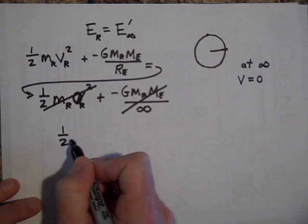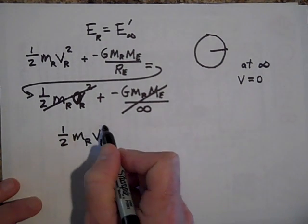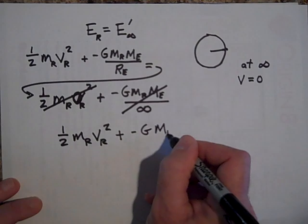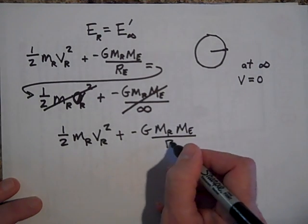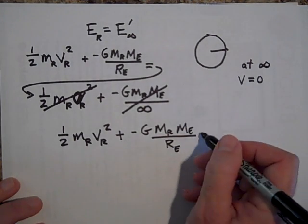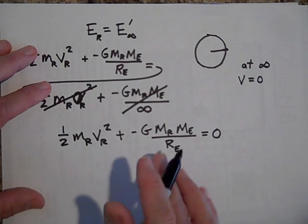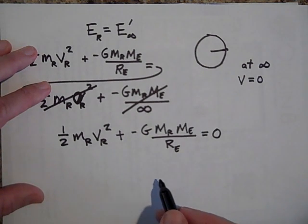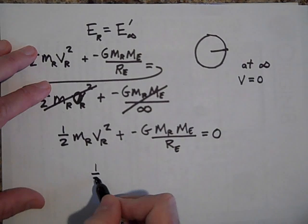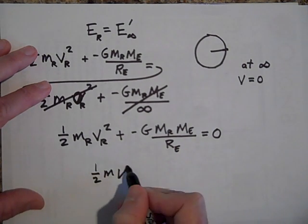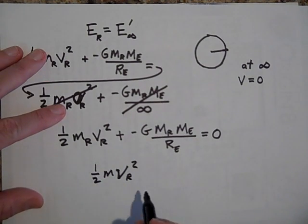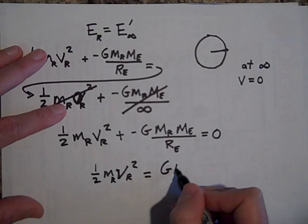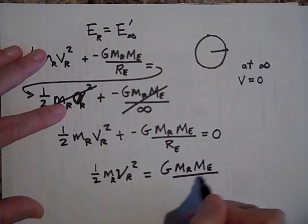Setting total energy equal to zero: one half times the mass of the rocket times the velocity of the rocket squared, plus negative G times the mass of the rocket times the mass of the Earth all over the radius of the Earth, equals zero. Bringing the potential energy term to the other side gives: one half m_r v_r squared equals G times m_r times M_Earth all over R_Earth.